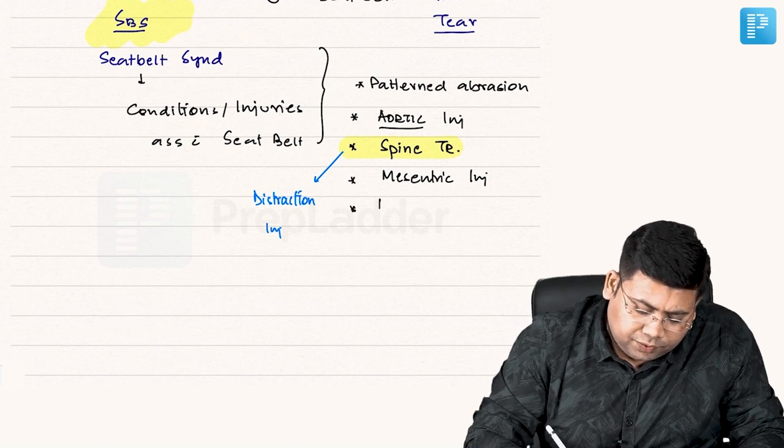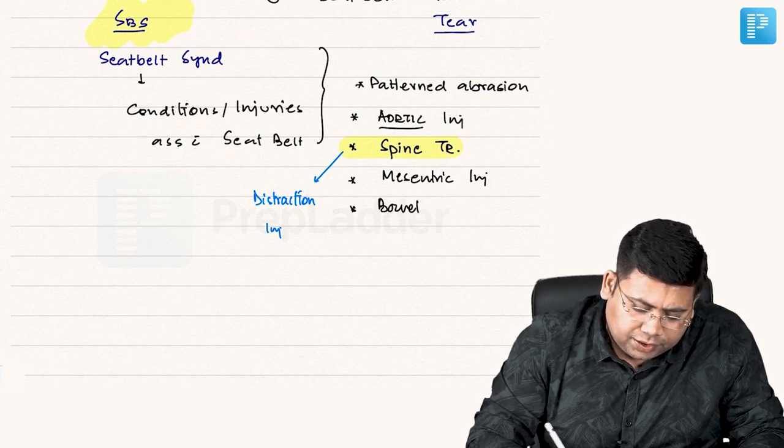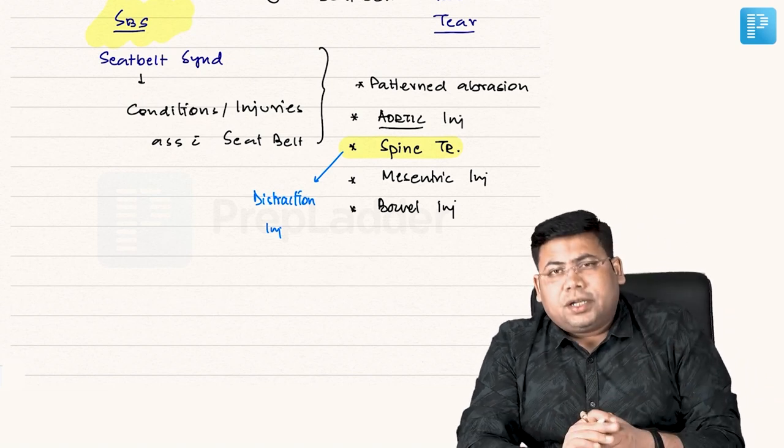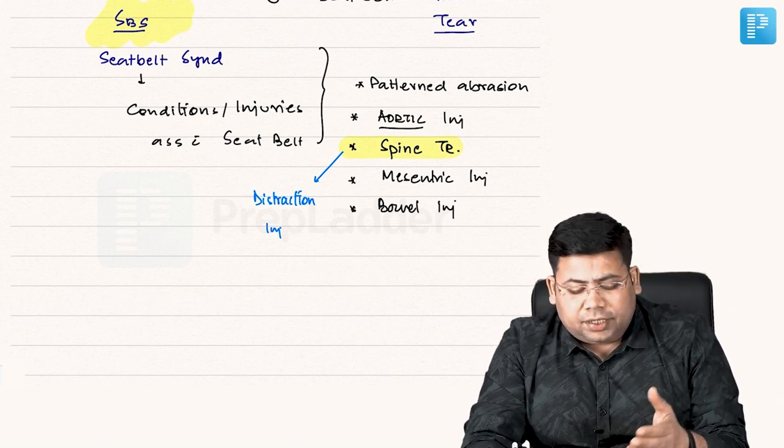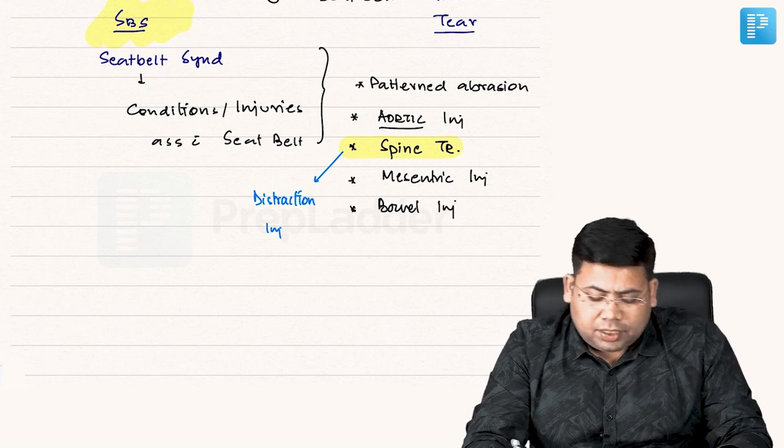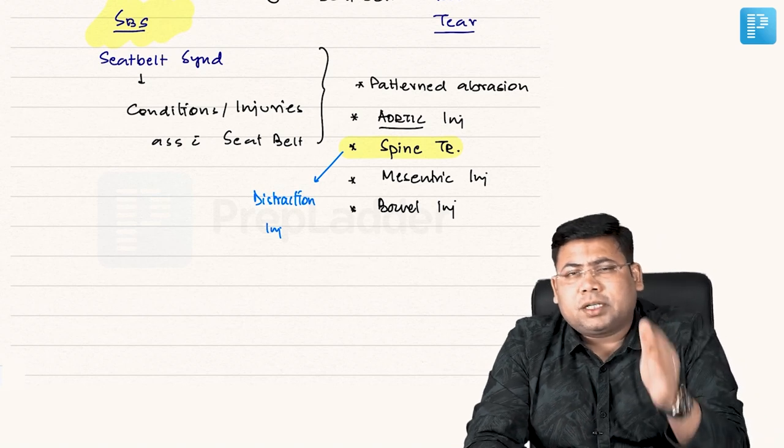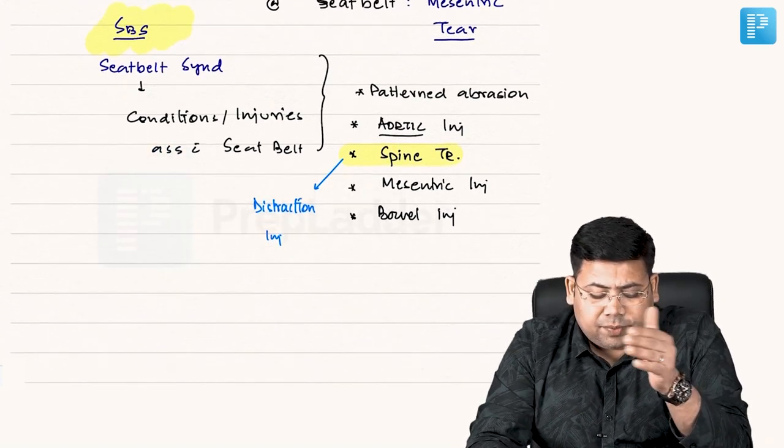It can be associated with bowel injury. So a variety of conditions can be associated with seat belt. This group - whenever seat belt is associated with multiple injuries - this is what is known as seat belt syndrome.